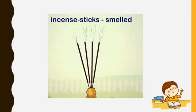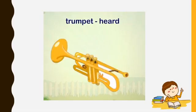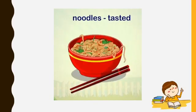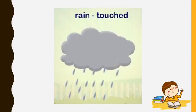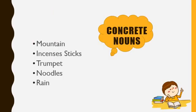Incense sticks can be smelt. A trumpet can be heard. Noodles can be tasted — noodles, everyone knows how they really taste. Rain can be touched; we can really feel those rain droplets in our hands. So mountain, incense sticks, trumpet, noodles, and rain are concrete nouns.